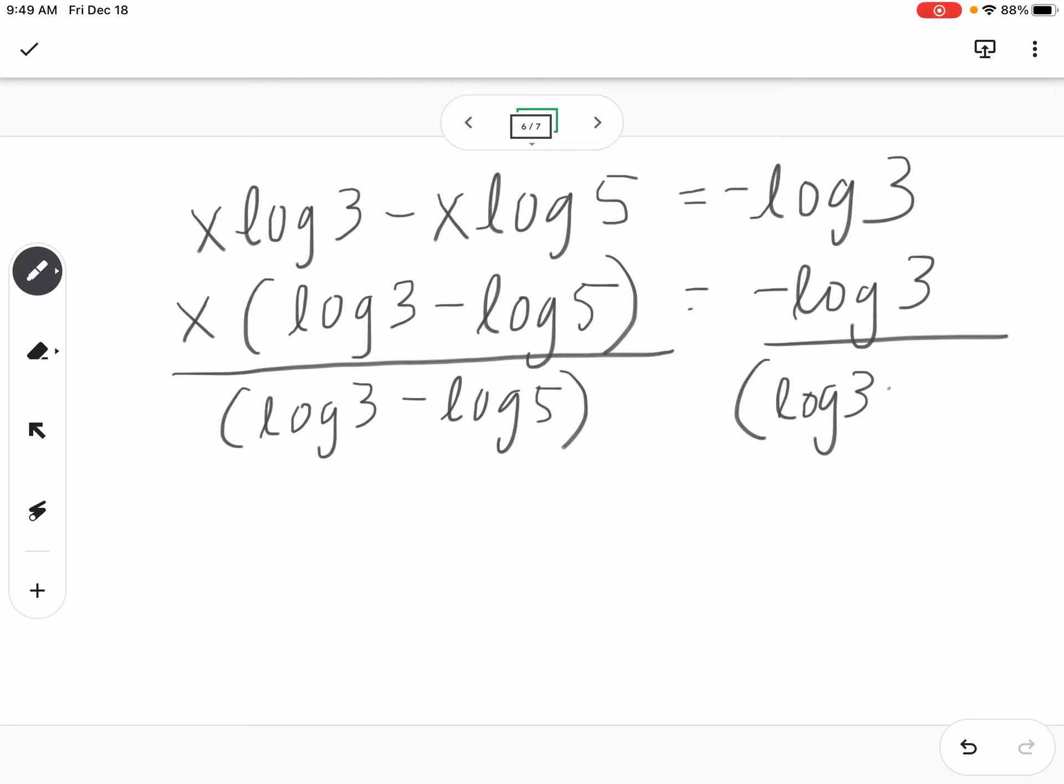Remember, these are all just numbers. I can type these into the calculator. The reason I'm not typing them in earlier is I don't want rounding errors. So I'm waiting until the very end. My final answer here, I would take negative log of 3 divided by log of 3 minus log of 5 in my calculator with parentheses, and we get 2.15.